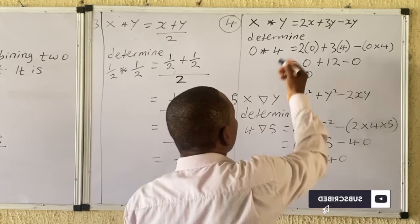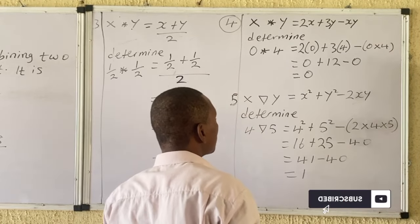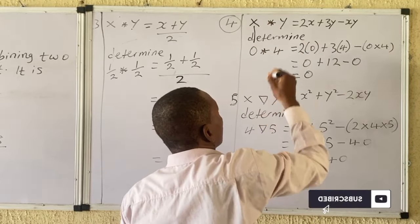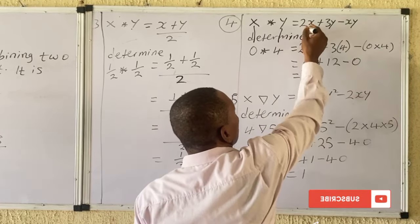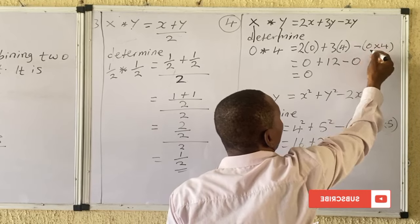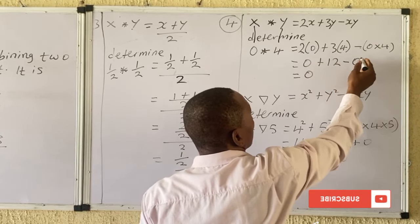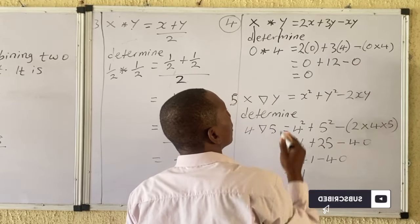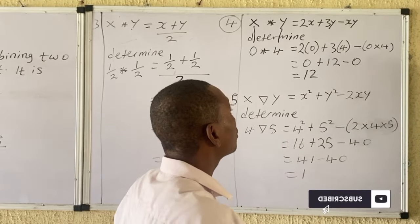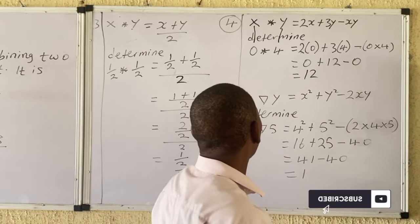Question number four: x★y = 2x + 3y − xy. Here x = 0 and y = 4. So: 2(0) + 3(4) − (0×4) = 0 + 12 − 0 = 12. Note: multiplying by 0 gives 0, but addition and subtraction follow different rules, so 12 − 0 = 12.